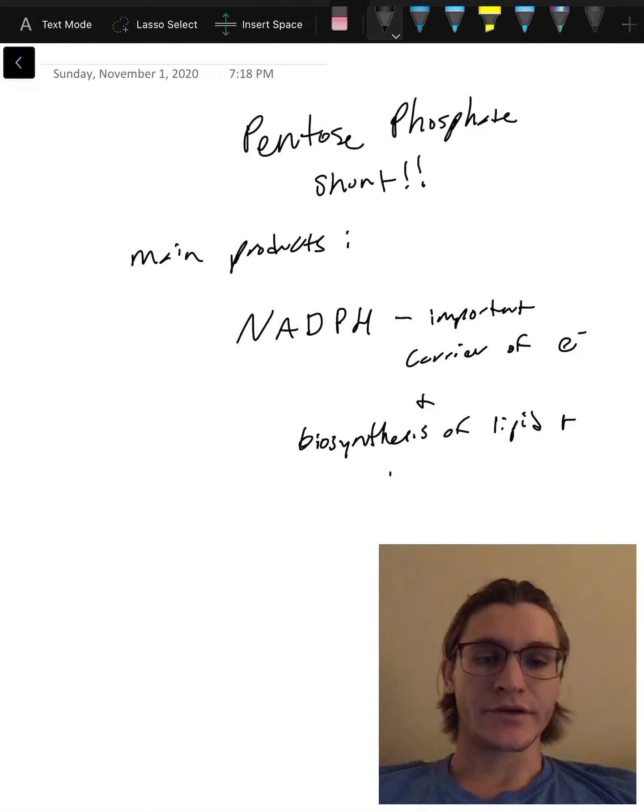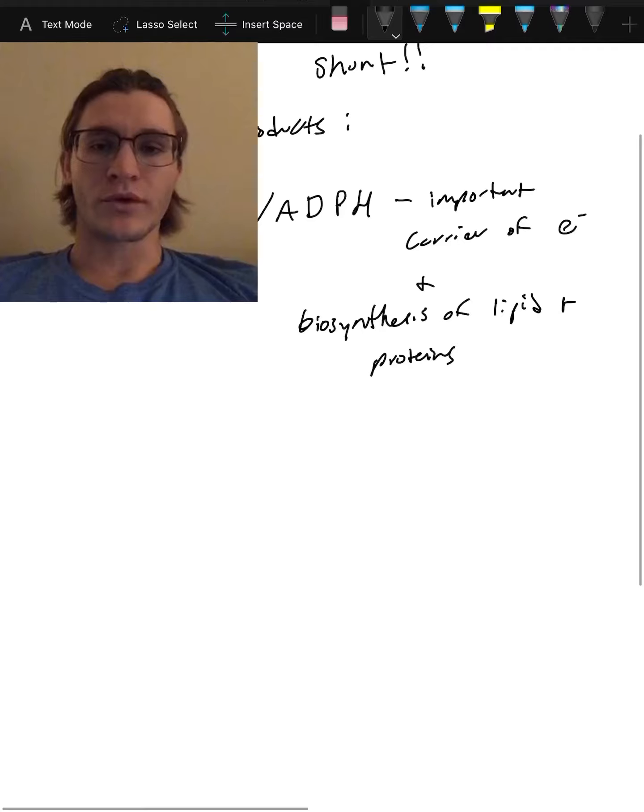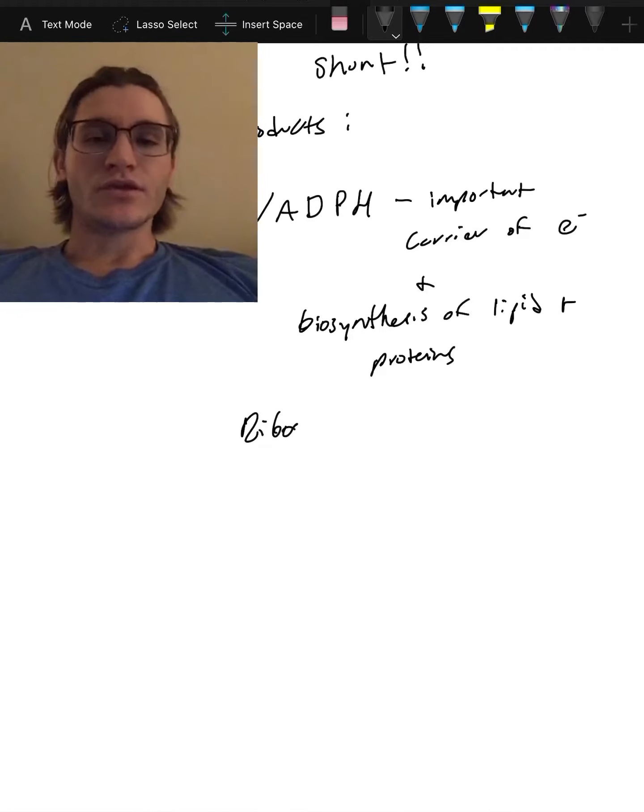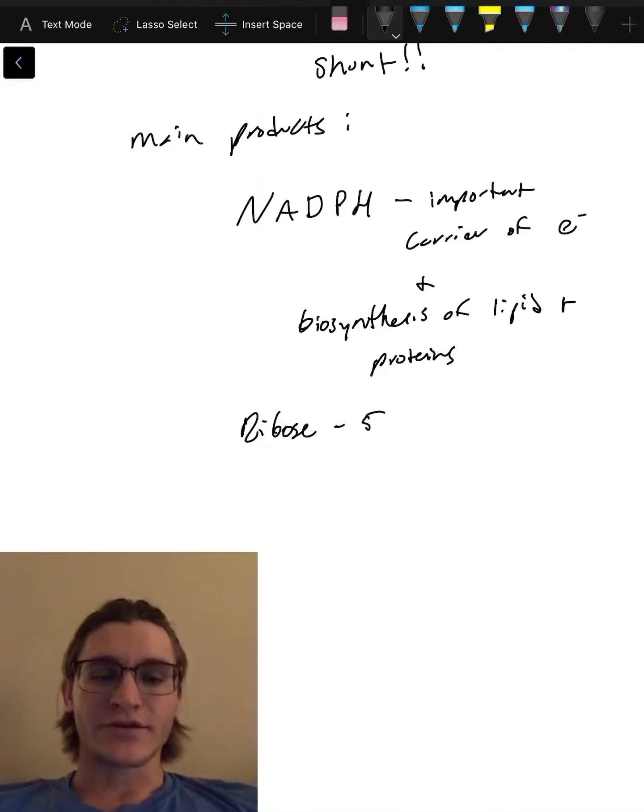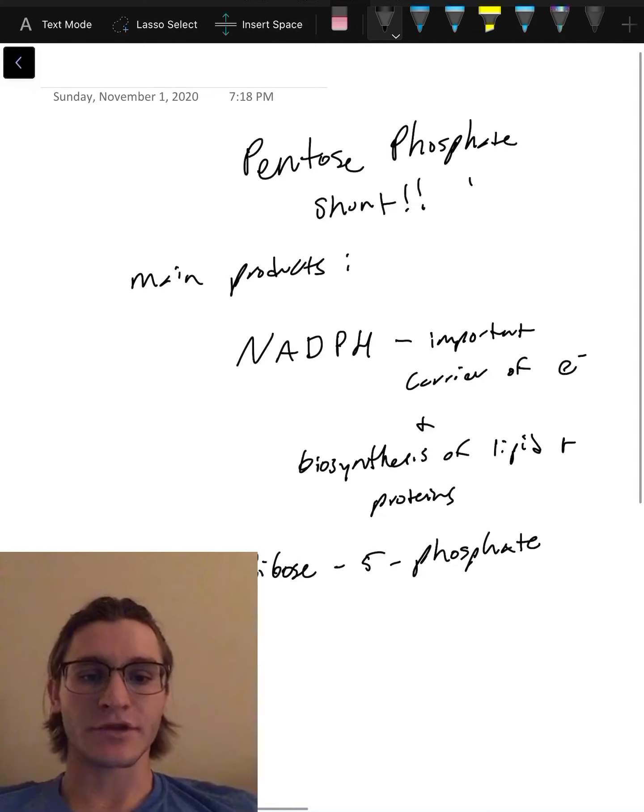The other main product is gonna be ribose 5-phosphate, which we can use for synthesis of nucleotides. That's probably our main product of the bunch, but NADPH is another one. So that's what we get, and this is off glycolysis as I mentioned before.